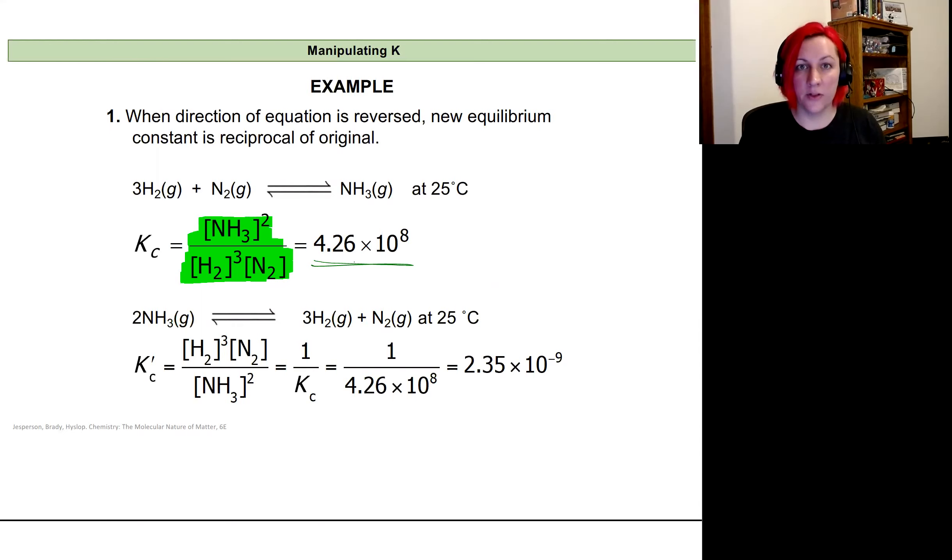Now, if I look at the reverse reaction, let's say I start with ammonium instead and form hydrogen and nitrogen, then I'm going to have that hydrogen and nitrogen on the top of my expression because they're the products. Remember, what I set as the reactants and products is relative to what I'm doing in the lab.